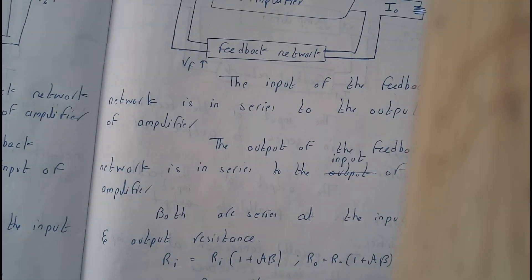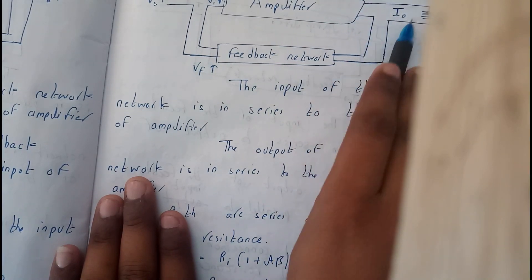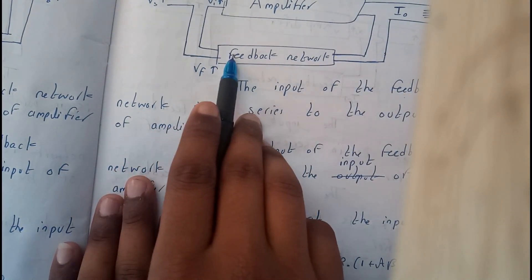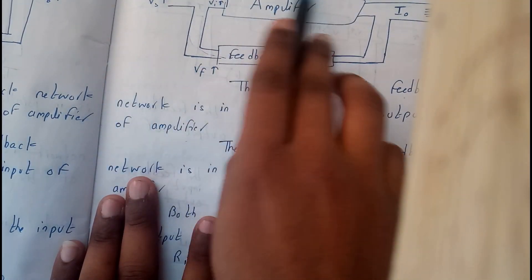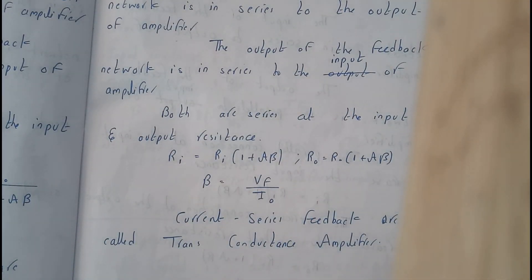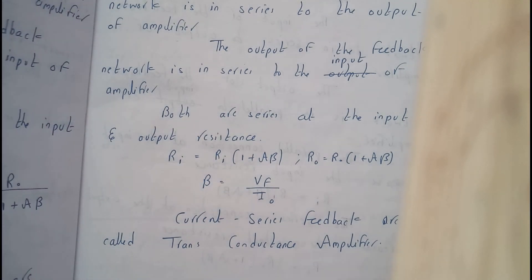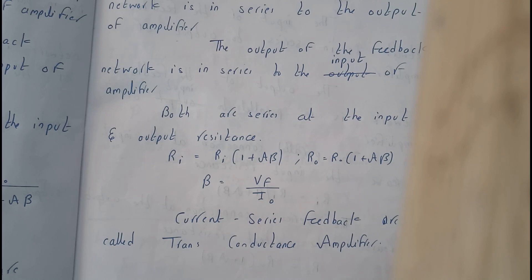Current series is both series (SS). The input of the feedback network is in series with the output of the amplifier. The output of the feedback network is in series with the input of the amplifier. Both input and output resistance increase: Ri equals Ri times (1 plus A beta), R naught equals R naught times (1 plus A beta). Beta equals VF by I naught. Current series is also called a trans-conductance amplifier.